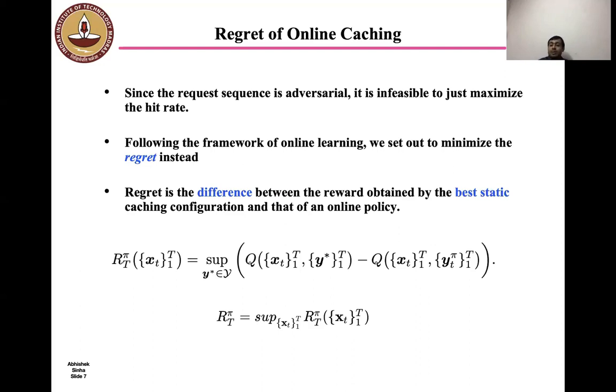In other words, we define first the conditional regret corresponding to a request sequence xt as follows. It is simply the difference in the reward that is q(xt, y*) and q(xt, yt, π) where π is a given policy and we take that difference. And since we optimize over all static policies, this quantity is optimized, maximized over y* over the set of all feasible caching configuration. The regret for a particular policy π is simply defined to be the worst case conditional regret and the supremum is taken over all possible request sequences.